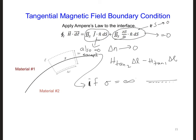So as a result, we end up with an analogous relationship as we had for the tangential electric field. We get H tan 1 is equal to H tan 2, and I'll say as long as neither material is a PEC, perfect electric conductor with sigma equal to infinity.